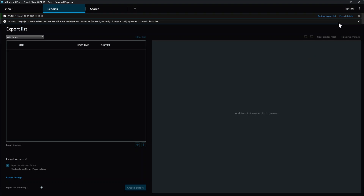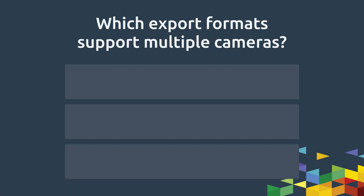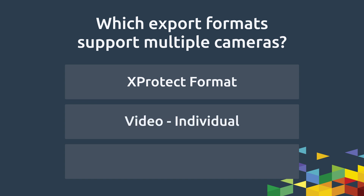Now, let's address a common question about export formats. In our example, we demonstrated exporting using the XProtect format, which we highly recommend. But can you export footage from multiple cameras in a different format, such as standard video files? Yes, you can export multiple cameras as video files, and you have two options: as individual files — this option creates a separate video file for each camera — or you can use the Combine Video option, which exports footage from all cameras into a single video file, playing each camera's footage in sequence: first camera, second camera, and so on.